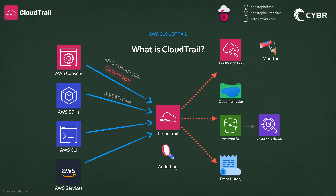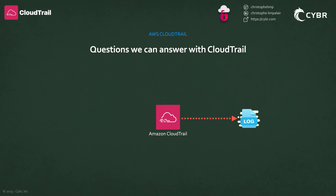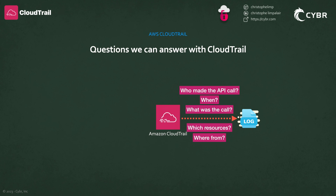If something weird is going on in your account, especially if it's a security-related event, but also operational issues, then CloudTrail's data should probably be one of the first, if not the first, places that you investigate. It is a service that helps you answer important questions like who took this action and when, what resources did they access or modify, what events happened during a certain time frame, etc.